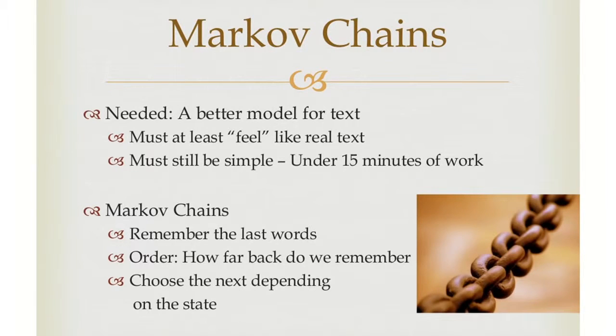We're going to find a model that, on the one hand, gives me something that at least feels like poetry — it's still not going to actually make sense or have real context — and it also must be very, very simple, because what we want to do is show you something you can just take in a Python interpreter, program very quickly, and play around with, whether you try poetry, the Bible, or Lord of the Rings. And what we're going to use is Markov chains. Markov chains are a relatively cool concept — we won't explain them end to end, but we'll at least explain what they mean in this context.